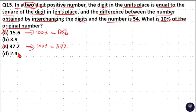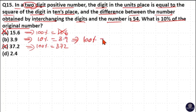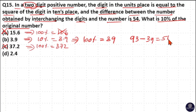Remaining options are B and D. For option B: if 10% is 3.9, then 100% is 39. If you interchange 39, it becomes 93. The difference between 93 and 39 is 54, which matches the question. So option B is your answer.